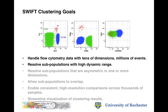Our Swift clustering goals were first of all to handle flow cytometry data with many dimensions — up to 35, for example, with CyTOF data — and several million events. We want to resolve subpopulations across a very wide dynamic range. In this example, three clusters are chosen from a Swift analysis of a large sample, and the cluster sizes vary from quite small — in this case 69 cells — up to 22,000 cells in the blue cluster, showing a good dynamic range.